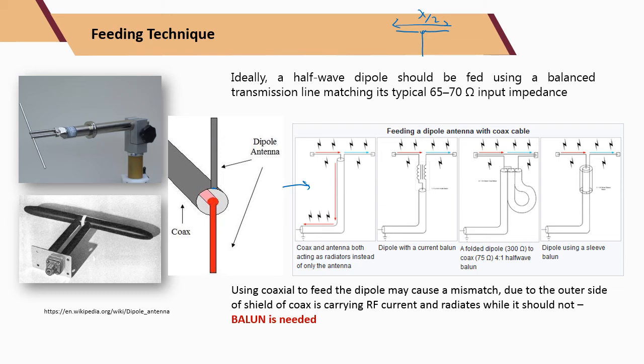Looking at the image, when one arm is connected to a coaxial cable, the total current flow shown by the red lines is not the same magnitude as on the other arm, producing an imbalanced structure. To eliminate this imbalance or additional current, we need to add an additional structure known as a balun, so that the current on both arms will be of equal magnitude.